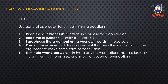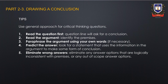Let's look at how we would apply the tips to questions that ask us to draw a conclusion. The first step is to read the question and identify the question line, which will typically ask for a conclusion. The second step is to read the argument and identify the premises. The third step is to paraphrase the argument using your own words, but do this step only if necessary. The fourth step is to predict the answer by looking for the answer option that uses information in the argument to make some form of conclusion. And the last step is to eliminate wrong answers by eliminating all options that are logically inconsistent with the premises. Answer options that are out of scope should also be eliminated.